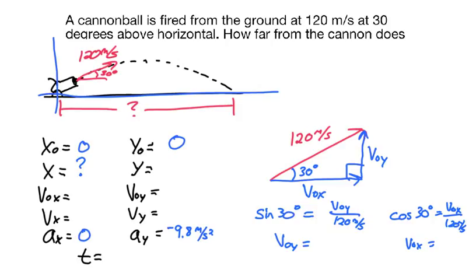I use sine of 30 degrees equals v-naught y over 120, and from that I can figure out, since sine of 30 degrees is one-half, that v-naught y is 60 meters per second, and cosine of 30 degrees equals v-naught x over 120, multiply both sides by the 120, and find that the v-naught x is 103.9 meters per second. Then those values I can fill in in my table, 60 meters per second and 103.9 meters per second.